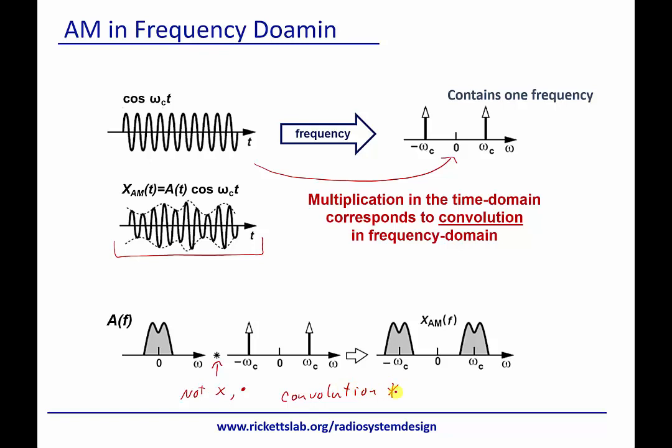So because we're multiplying in the time domain, we need to convolve in the frequency domain. And what that's going to do qualitatively is it's going to take this baseband signal, which is the spectrum of this envelope here, and it's going to place it on top of the two carriers.